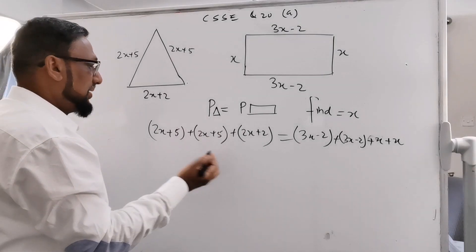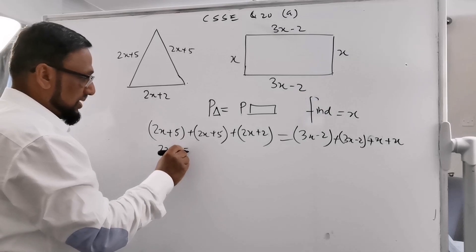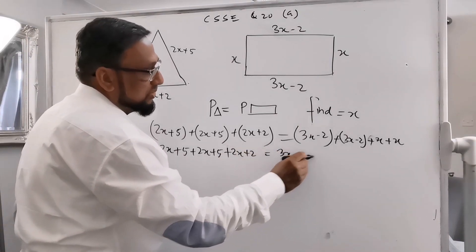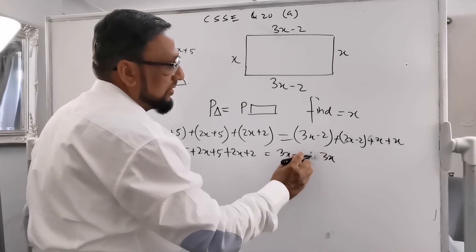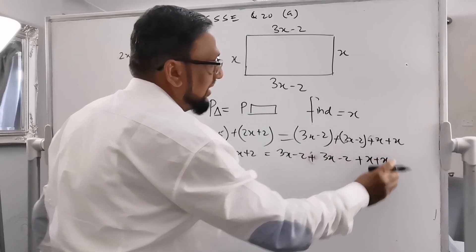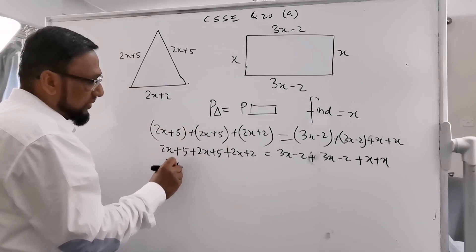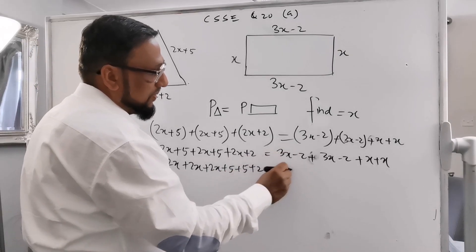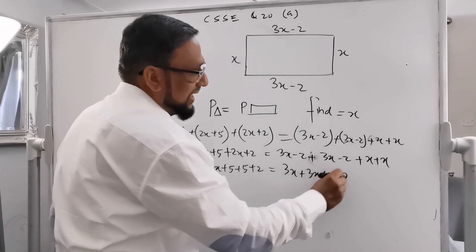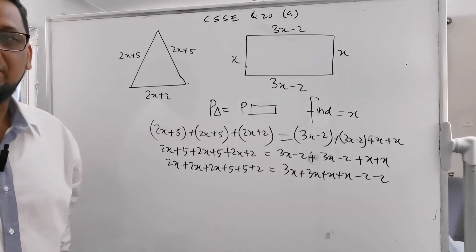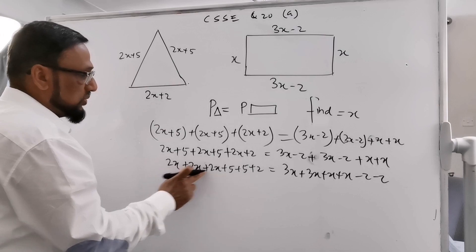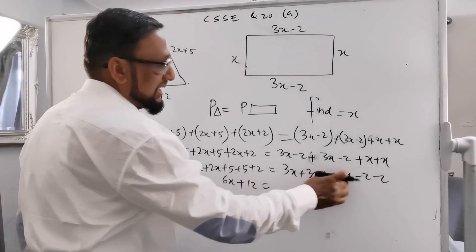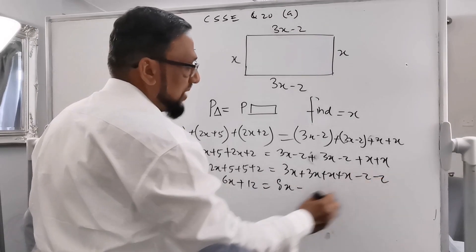Now we simplify. On the left side: 2x plus 5 plus 2x plus 5 plus 2x plus 2. On the right side: 3x minus 2 plus 3x minus 2 plus x plus x. Rearranging, the left gives 6x plus 12, and the right gives 8x minus 4.